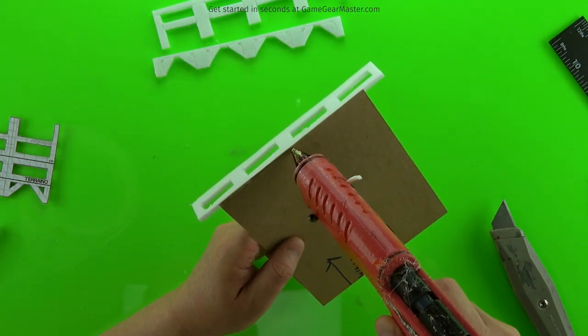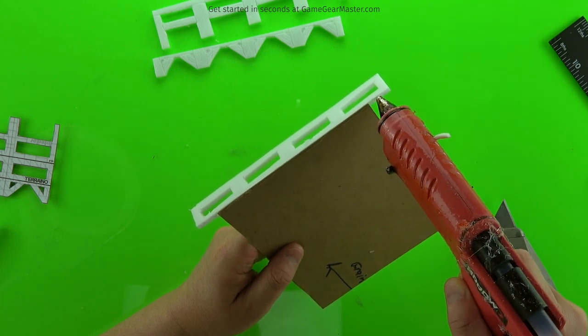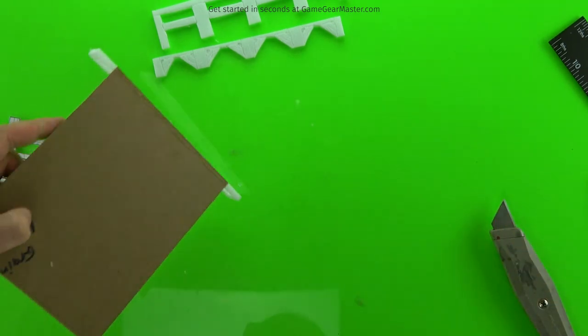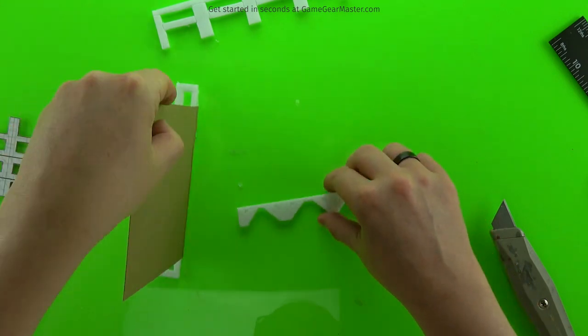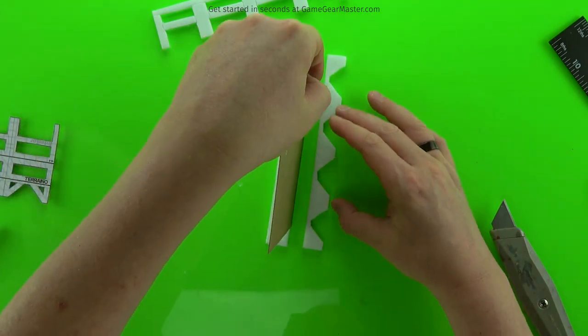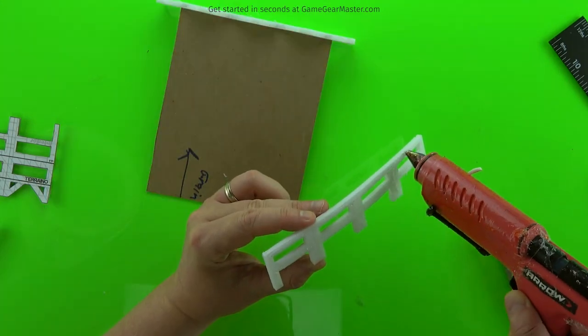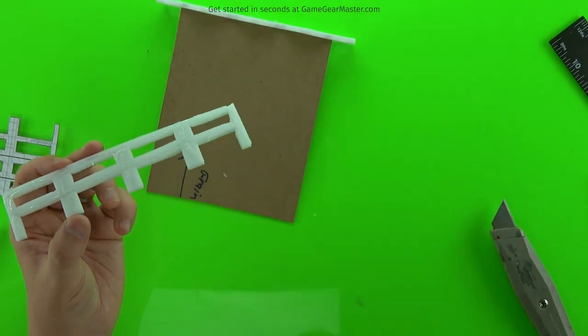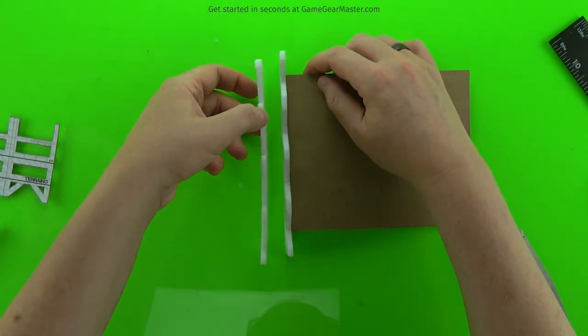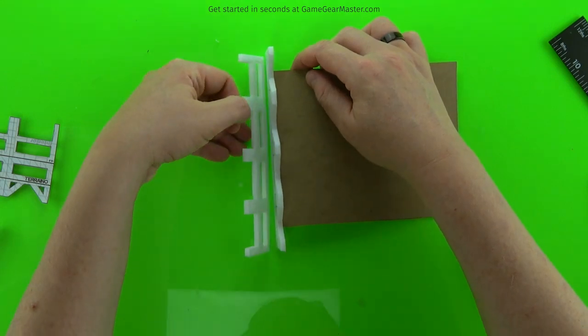And then we'll glue on the bottom piece, and we'll use our work surface to line that up. And then we'll put down the last component on the front of the railing, and we'll use the work surface to line that up as well.